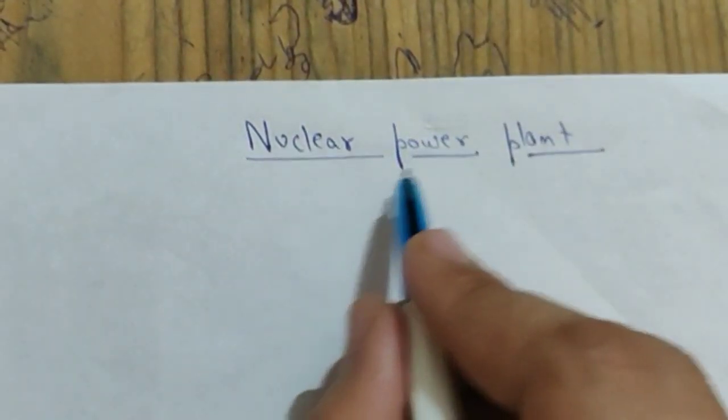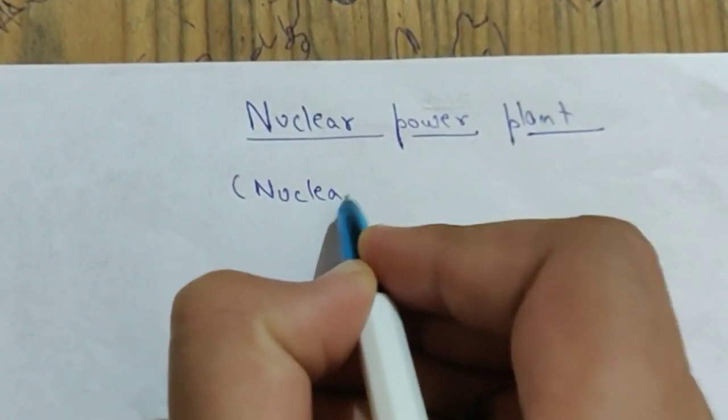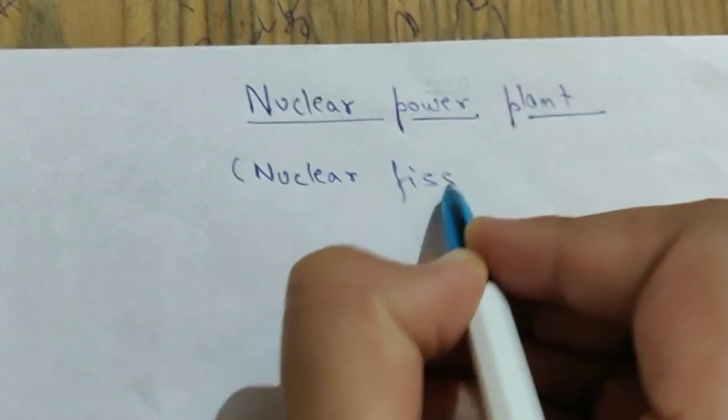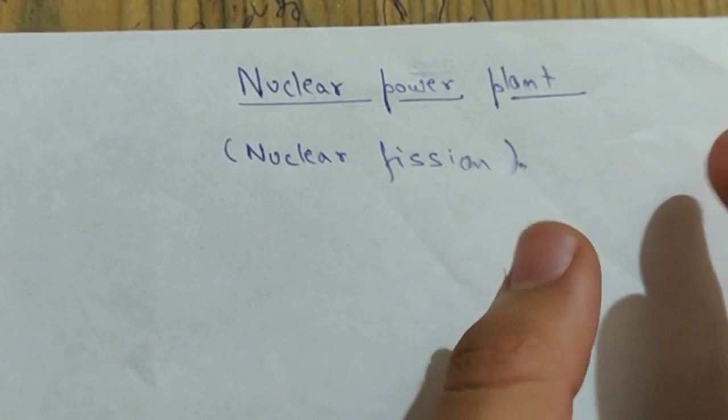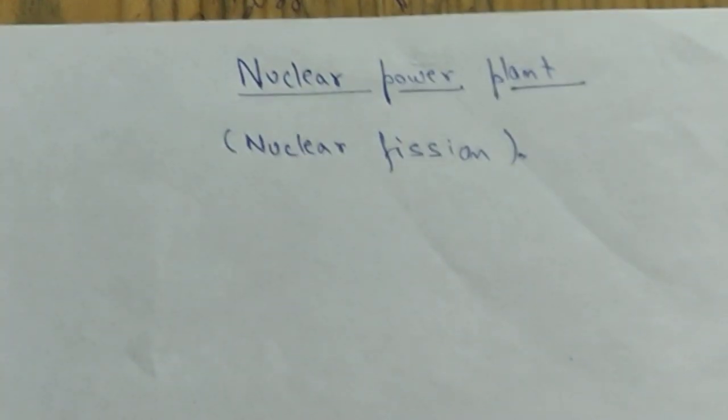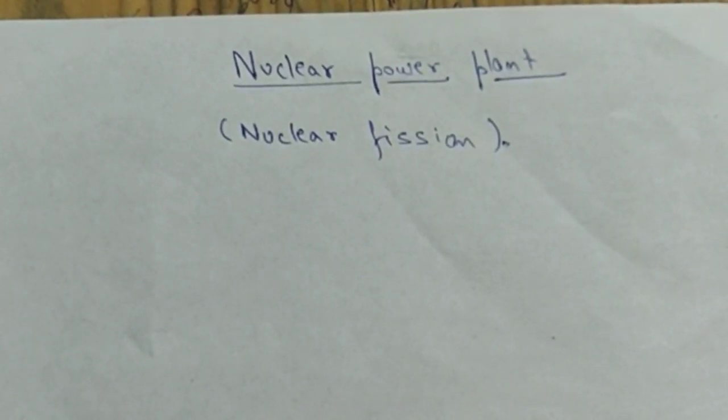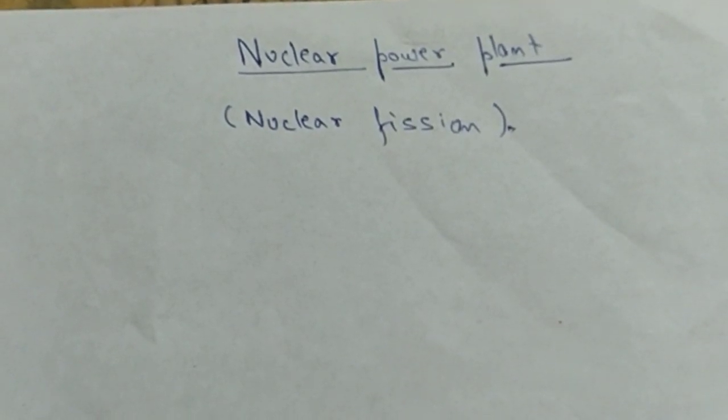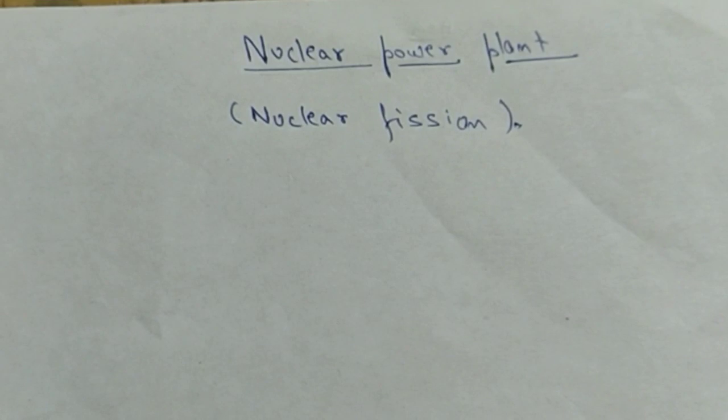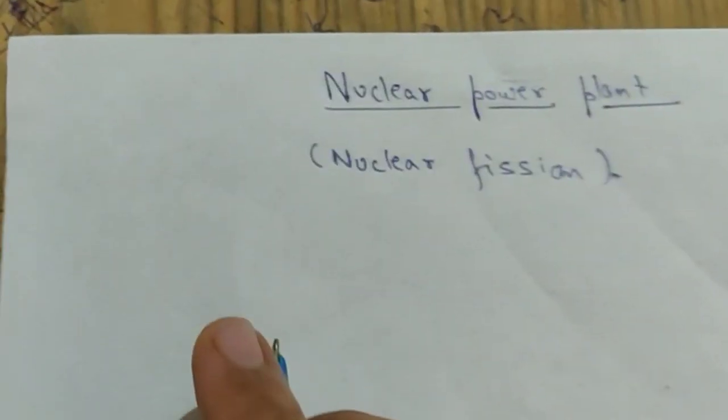So the nuclear power plant, the process used in nuclear power plants is nuclear fission. Nuclear fission means breaking of heavy nuclei into two small nuclei and this breaking of nuclei generates energy and this energy is used to drive a turbine. This energy is used to convert water into steam and this steam drives the turbine and this turbine is used to produce electricity. So this is the process of nuclear fission.